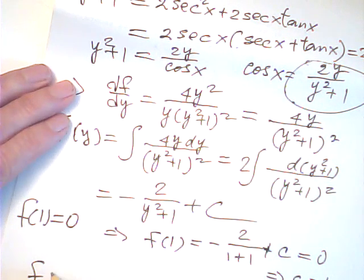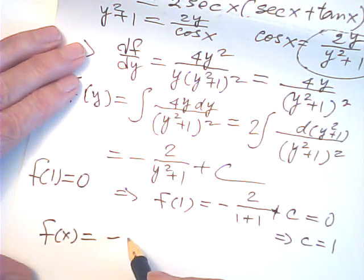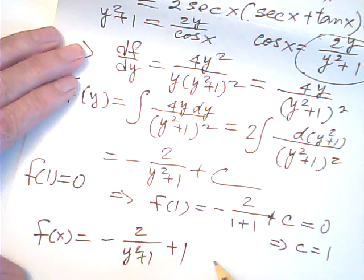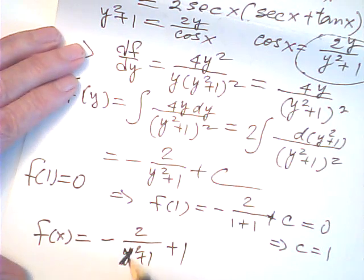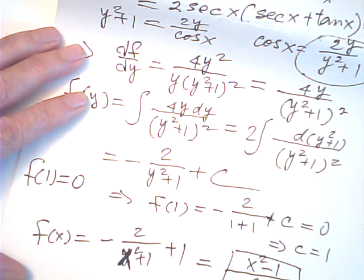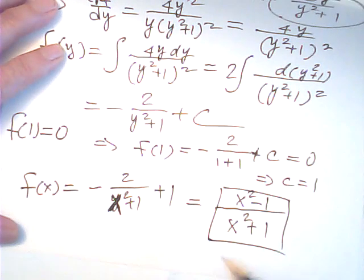Therefore f(y) = −2/(y² + 1) + 1. Replacing y with x: f(x) = 1 − 2/(x² + 1) = (x² + 1 − 2)/(x² + 1) = (x² − 1)/(x² + 1). We get the same result by using the second method.